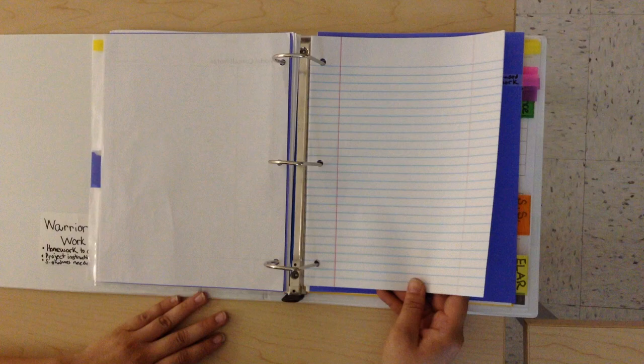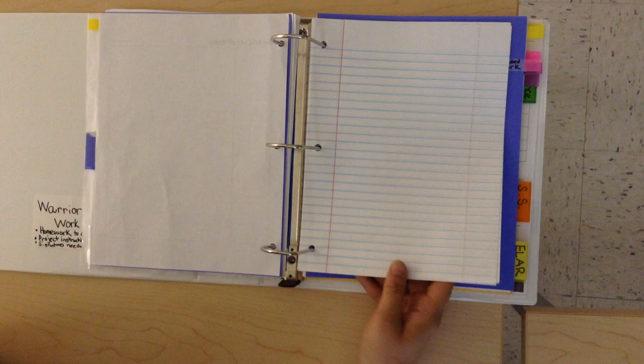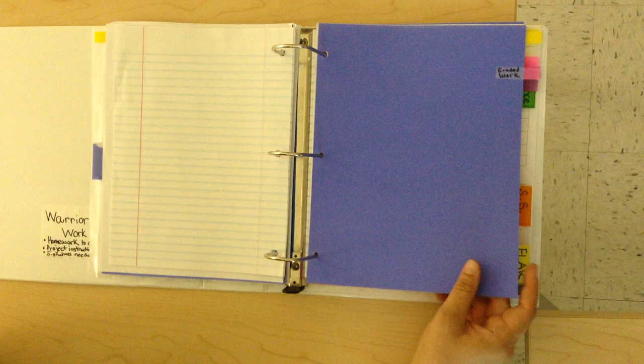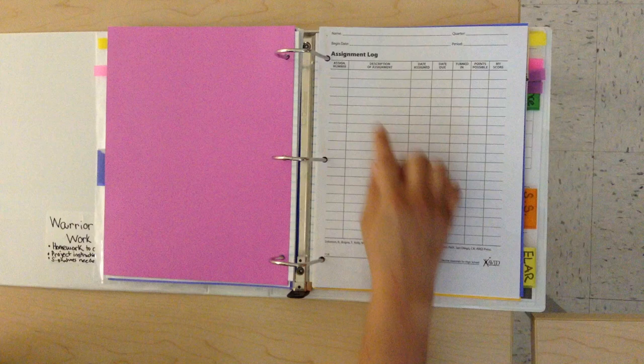Next, there is a blue piece of cardstock labeled graded work. This is where you will keep a log of all of your returned grades: assignment number, the name of the assignment, the date it was assigned and due, and the grade earned, points possible.